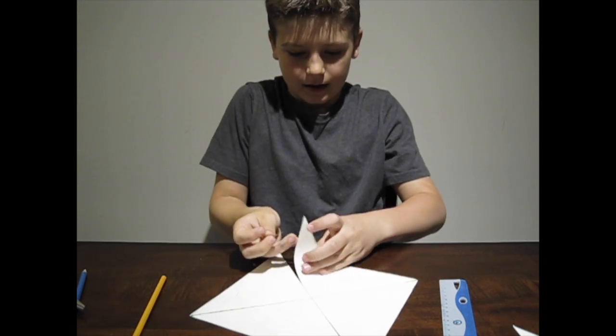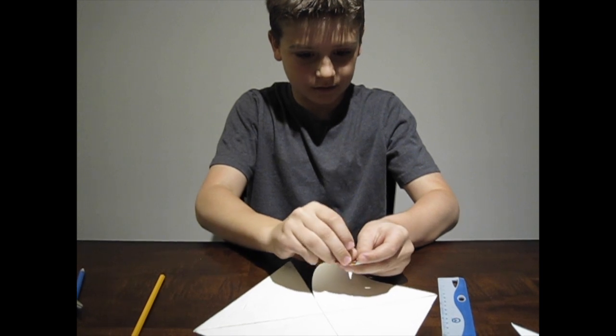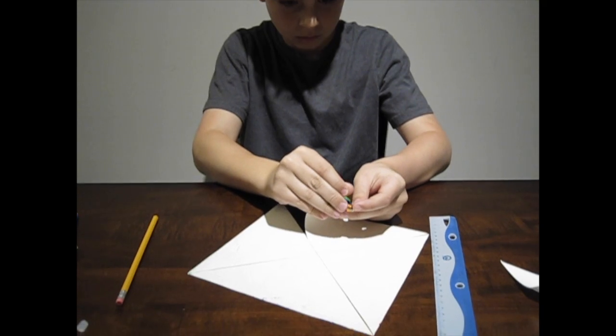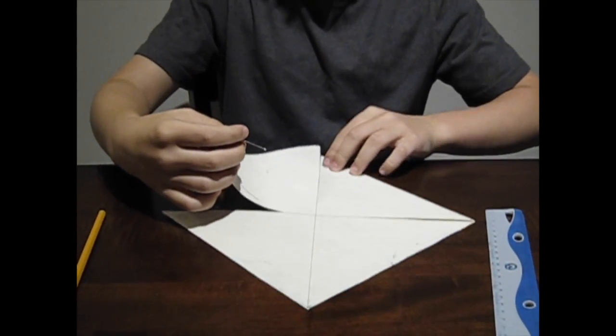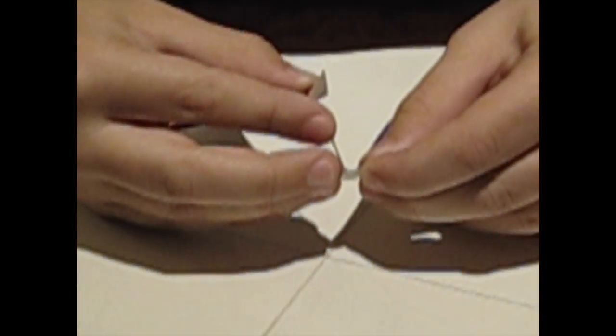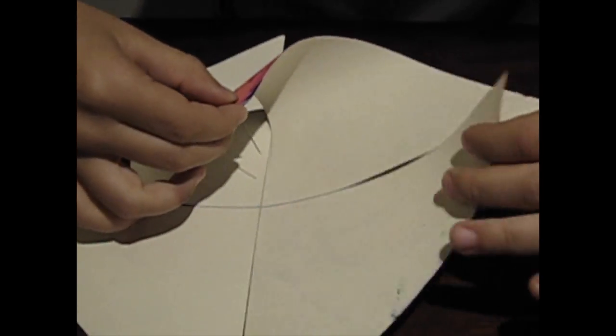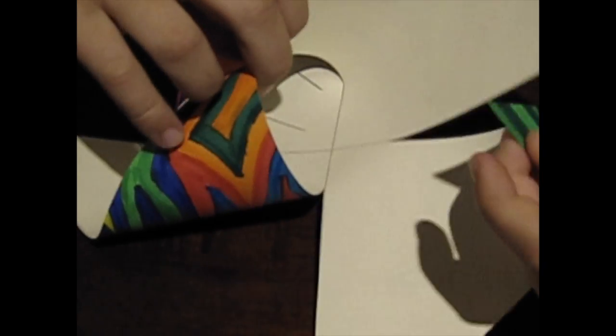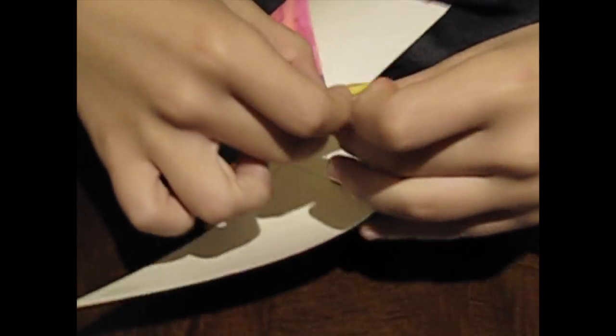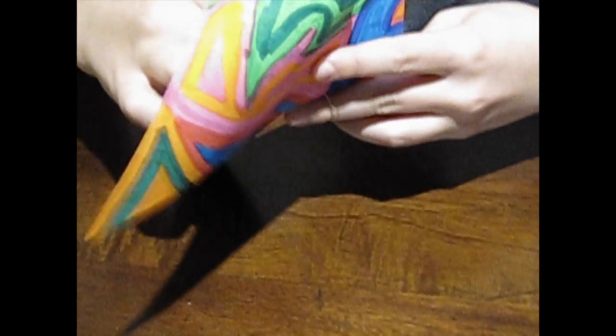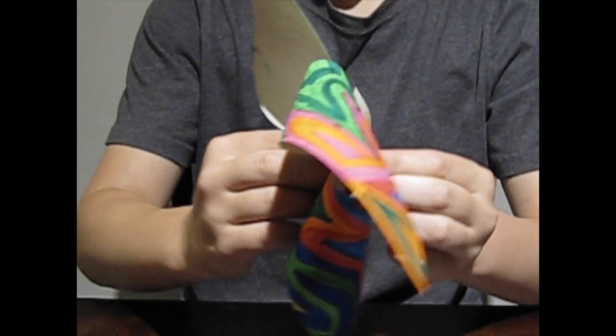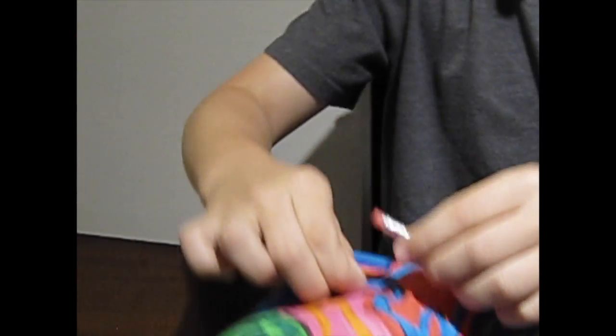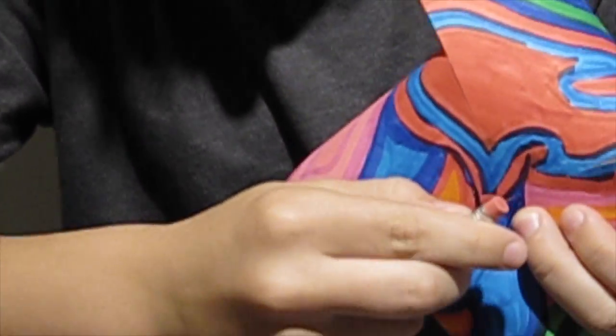You're going to want to take your pin and poke it through the corners of your piece of paper like so. Just like that. And then you take another corner and do the same thing. And then you take this corner and poke it through. And then you take this corner and poke it through. And then you take it through the middle and poke it through where your two lines meet. And then you take the end of your pin and poke it through the end of your eraser.